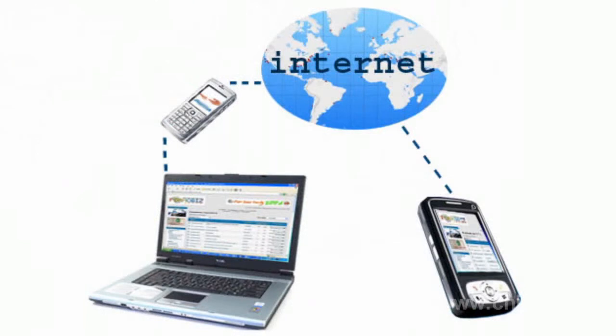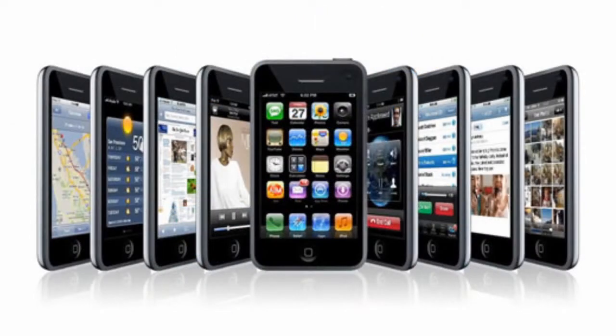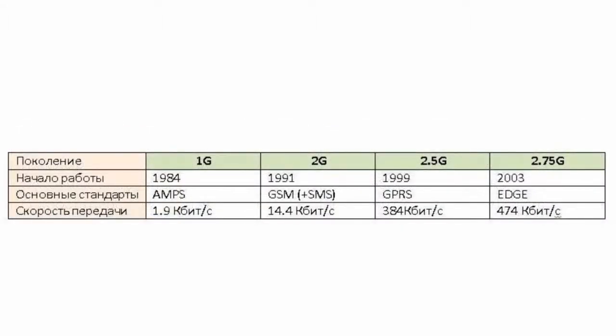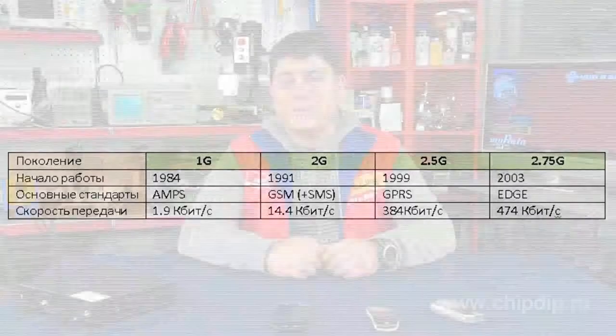Later, by the end of the 1990s, within the second generation there was a notable improvement: GPRS. It gave the opportunity to transfer data between devices and external networks — that is, access to the Internet from a mobile phone became available. The second generation transformed to generation 2.5G, and with the invention of the improved data transfer technology EDGE, to 2.75G. Consequently, the rate of information transfer was increasing significantly.